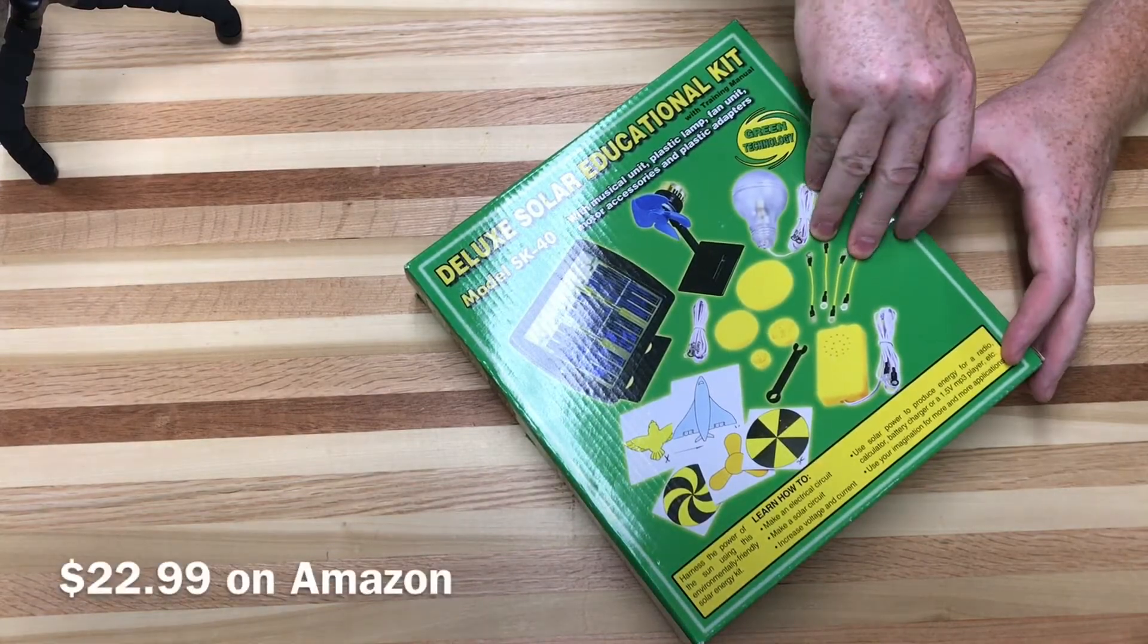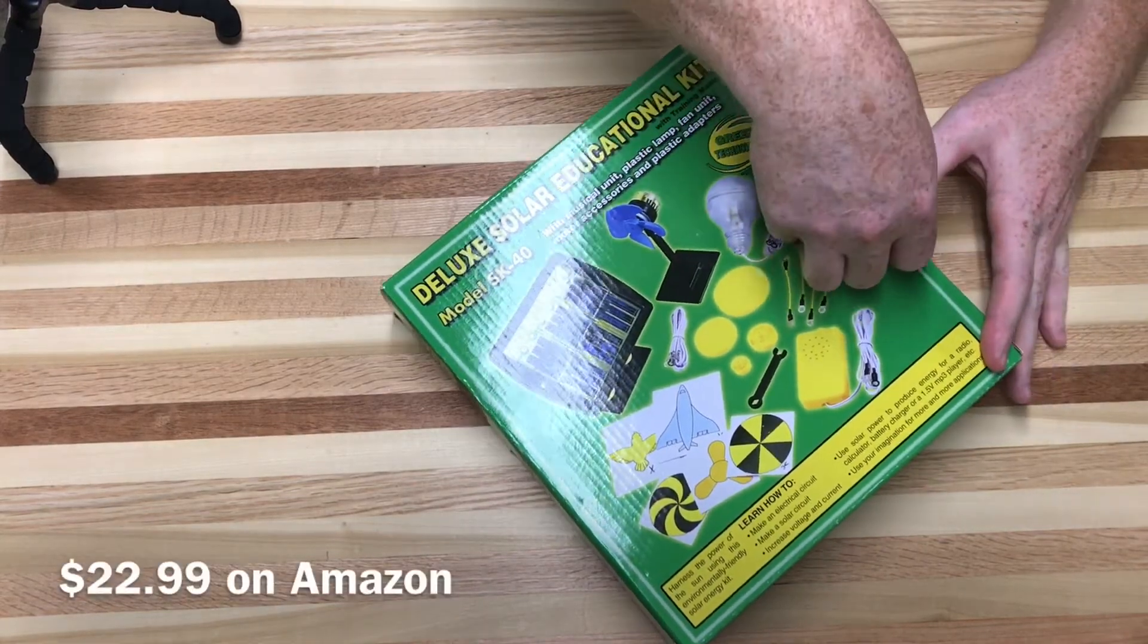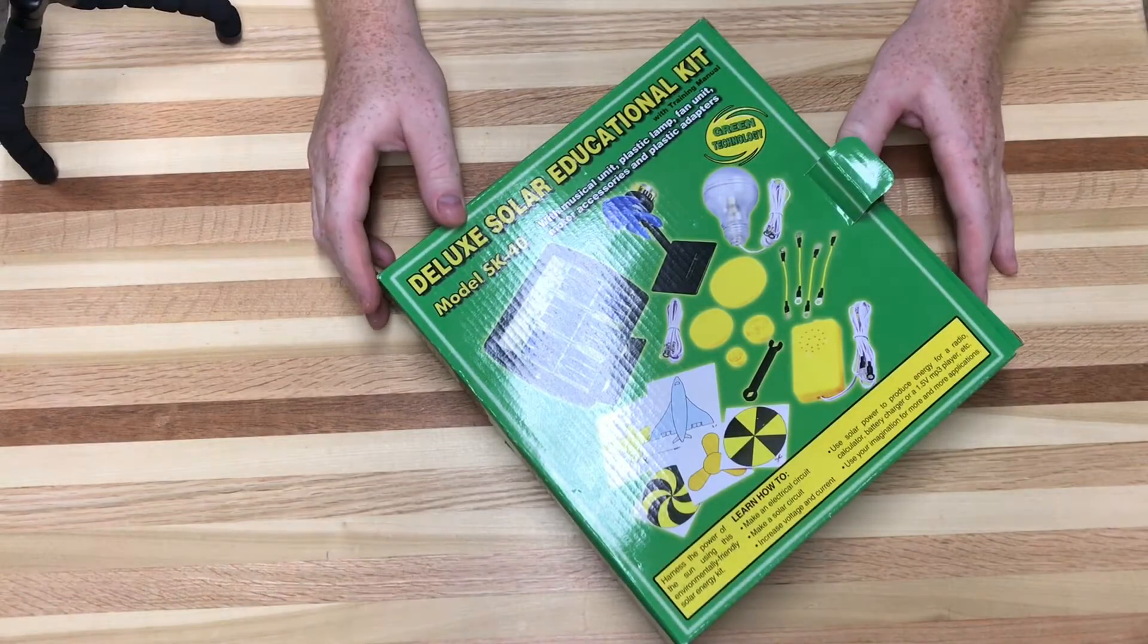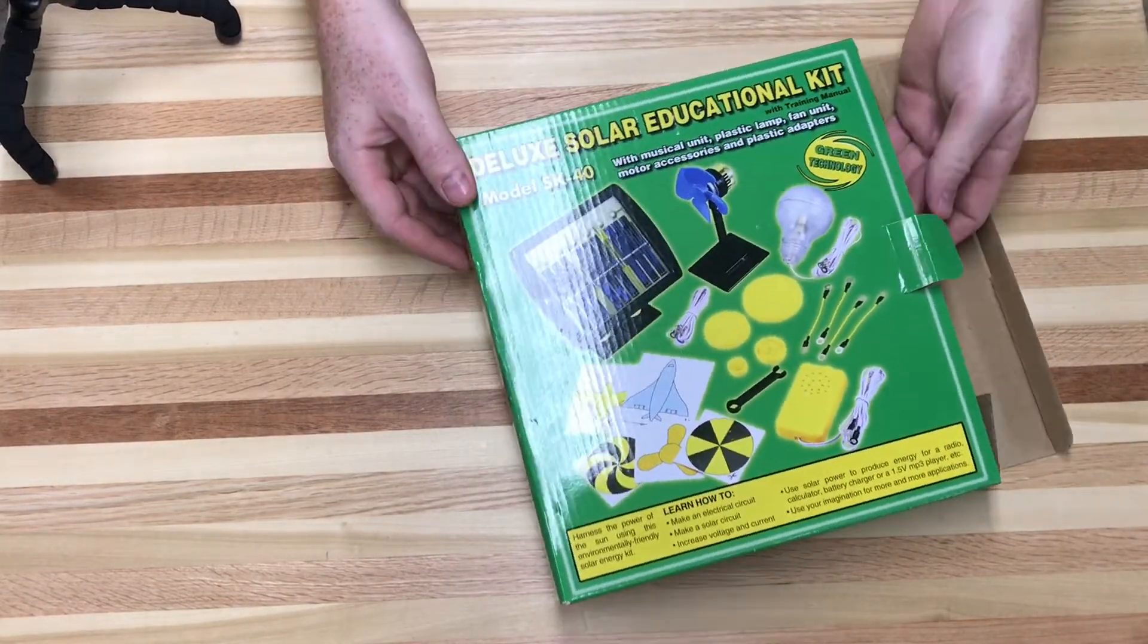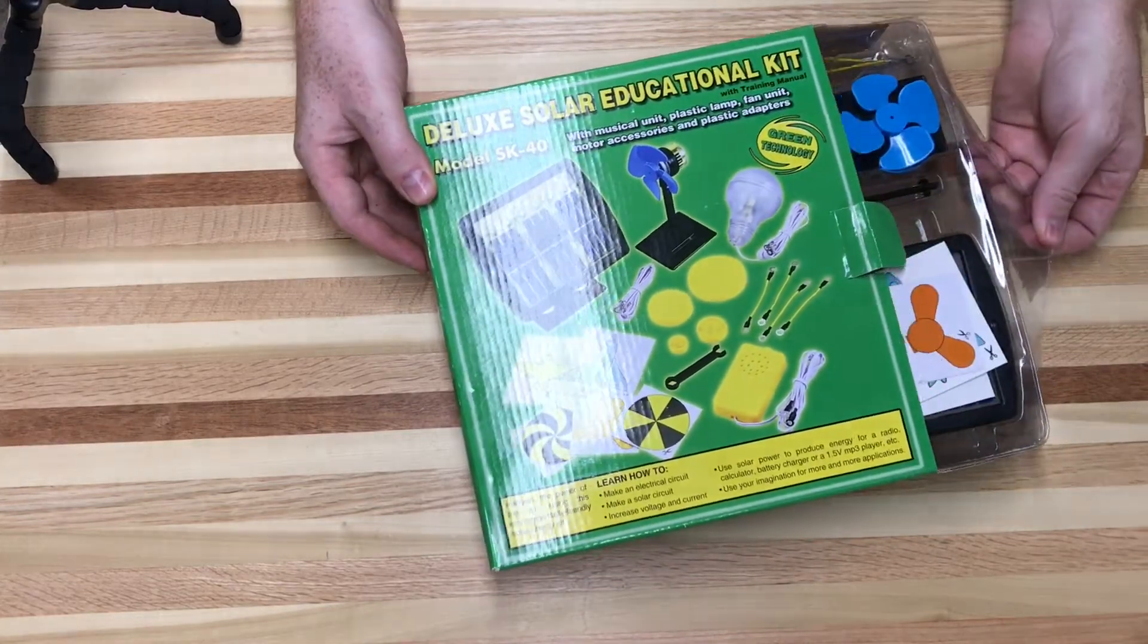This thing was $22.99 on Amazon. Apparently comes with all the parts and things you need to do any solar sort of activities. We're all looking for something to do in the fall school.